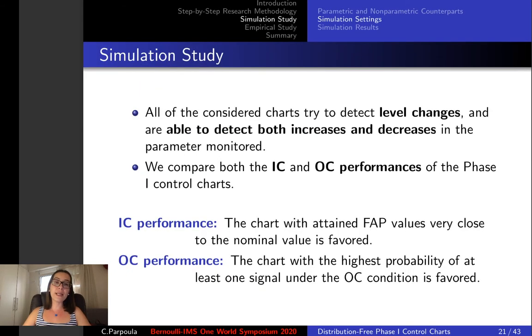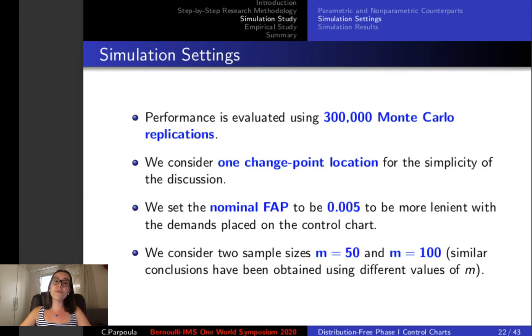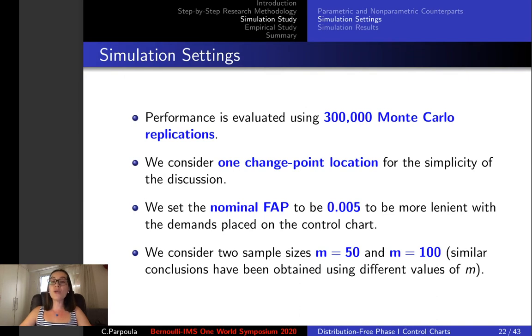As for the simulation study we compared both the in-control and out-of-control performances of the phase one charts. For simulation settings we used 300,000 Monte Carlo replications, we considered one change point location, we set the nominal false alarm probability to 0.005 and we considered two different sample sizes m equals 50 and m equals 100.